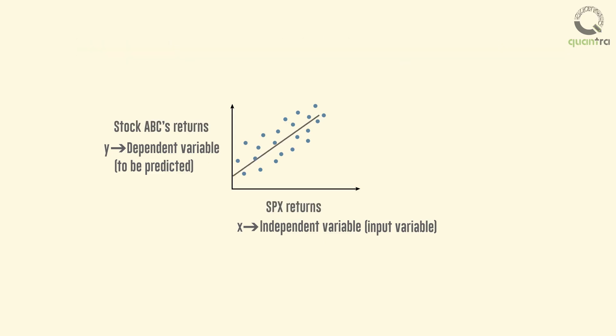If we try to fit a line through this scatter plot that best explains the observed values of y in terms of observed values of x, we get a simple linear regression model. Linear regression assumes a linear relationship between the dependent and independent variables.